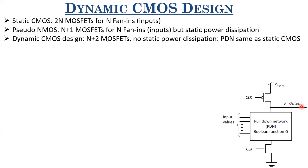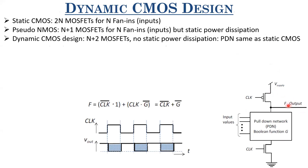The output is one when clock-bar equals one, or when PDN is on and clock equals one. The logic function realized at this output is clock-bar plus G-bar. When designing a dynamic CMOS circuit, you design the pull-down network such that F-bar equals G, and that will work fine. One key aspect is that this design must be synchronized with a clock, because this node is floating and the charges here determine the logic levels.